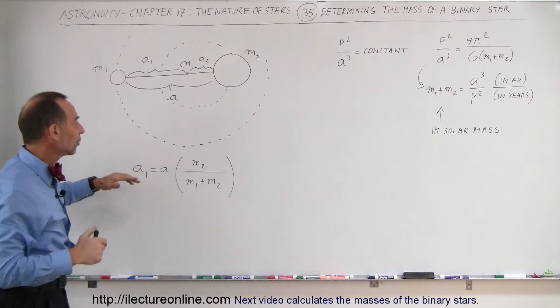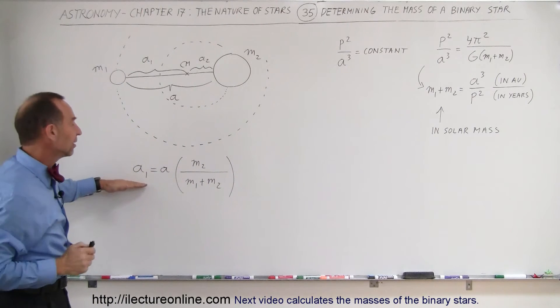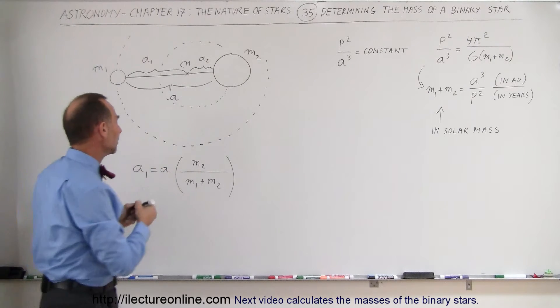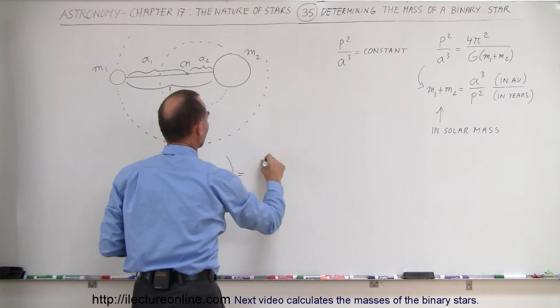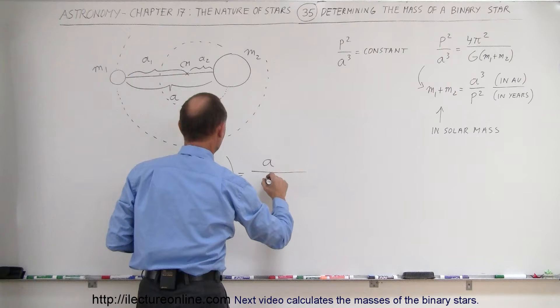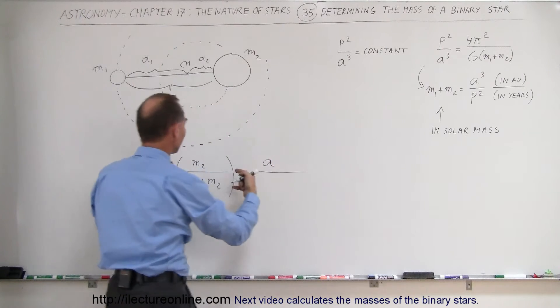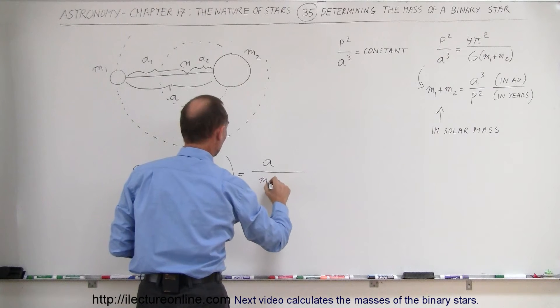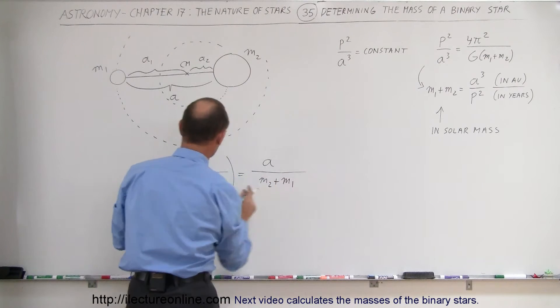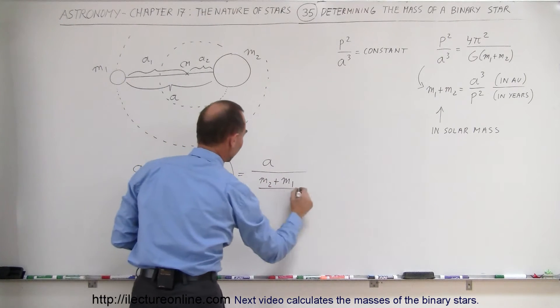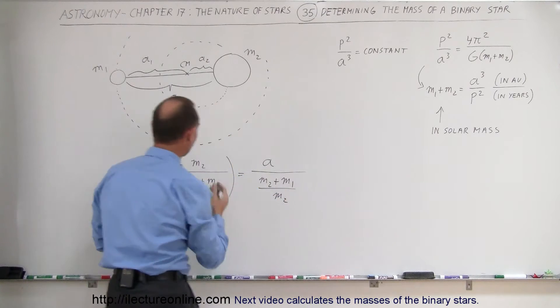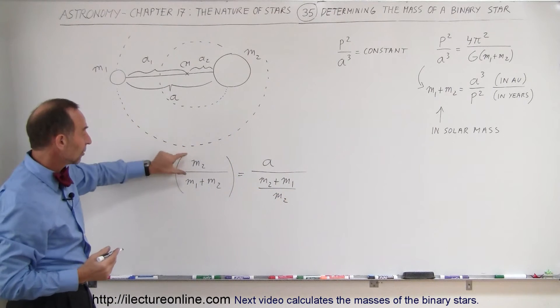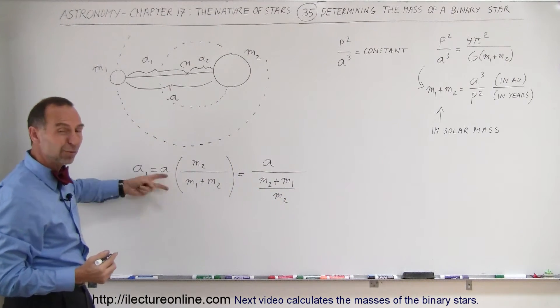So what we're going to do here is we're going to write this equation slightly different. First, we're going to bring this to the denominator, so we can write this as the total distance between the two divided by the inverse, because if we divide by this number, we have to take the inverse of that. So we have M2 plus M1. I'm going to reverse the two right here and divide by M2. So that's the exact same equation, except we took this and put it in the denominator, which means we have to flip it over.